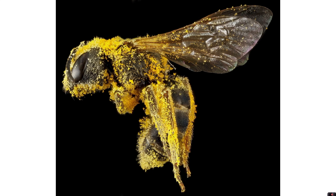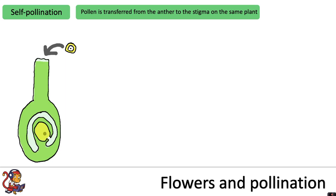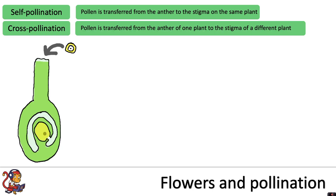As you can see, this bee here has clearly collected a lot of pollen from the anthers of several plants, which it can then transfer to the stigma of other plants. There are two types of pollination. The first is self-pollination, which is when pollen is transferred from the anther to the stigma on the same plant. The other type is cross-pollination, whereby pollen is transferred from the anther of one plant to the stigma of a different plant.